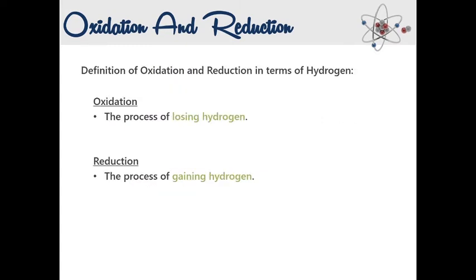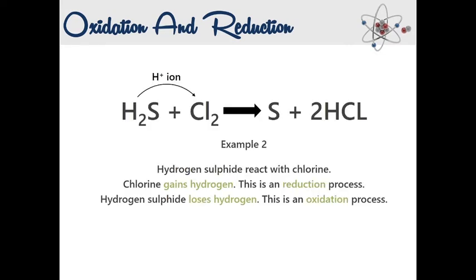Now let's talk about oxidation and reduction in terms of hydrogen. When an atom or compound loses hydrogen during the reaction, it is oxidized; when it gains hydrogen, it is reduced. For example, hydrogen sulfide reacts with chlorine to form sulfur and hydrochloric acid. Hydrogen sulfide loses hydrogen and forms sulfur — therefore, it is oxidized. Chlorine gains hydrogen from hydrogen sulfide and forms hydrochloric acid — therefore, it is reduced.